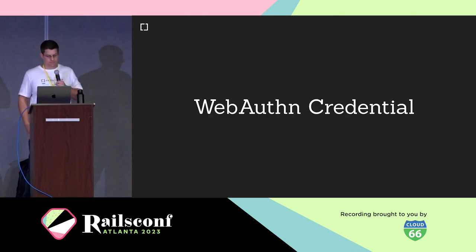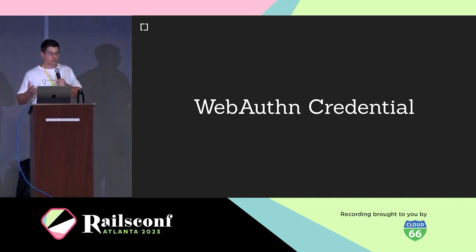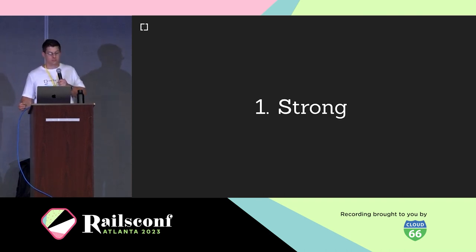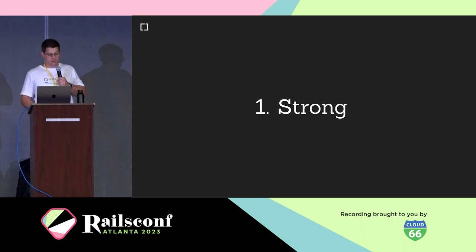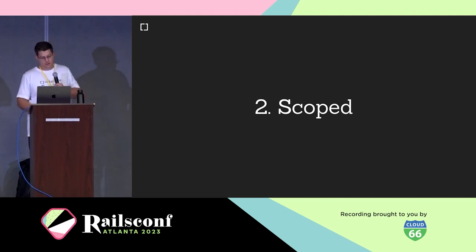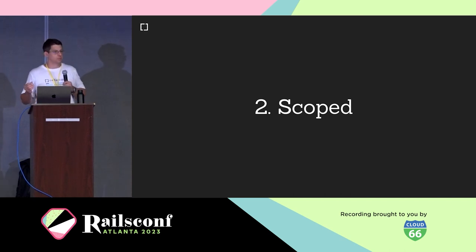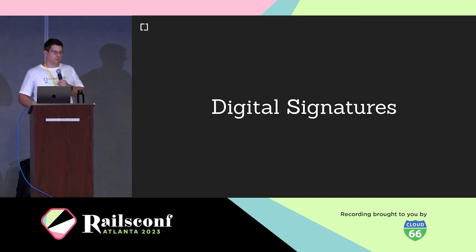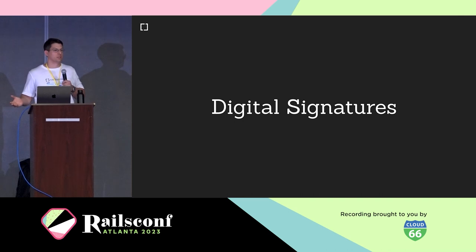A WebAuthn credential is nothing else than a public-private key pair. It has crucial properties: it's strong because it uses public key cryptography and cannot be brute-forced like a password. It's scoped — like cookies, it only works for a specific domain. And most importantly, it allows us to provide digital signatures and prove that we are who we say we are.